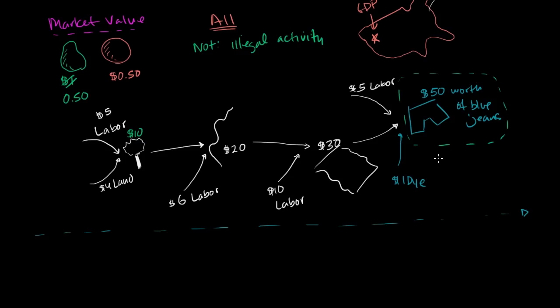We saw in the last video that the contribution to GDP will just be this final product. It will just be the $50 worth of jeans. We know its value based on its market value, what people are willing to pay for it. We would not count all of these intermediary goods. But that probably raised a question in your head.